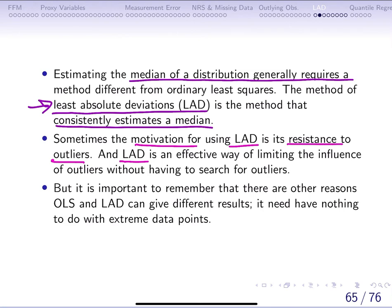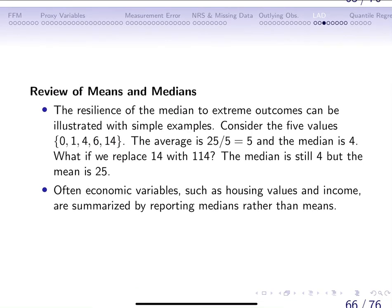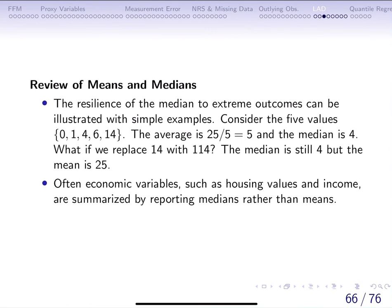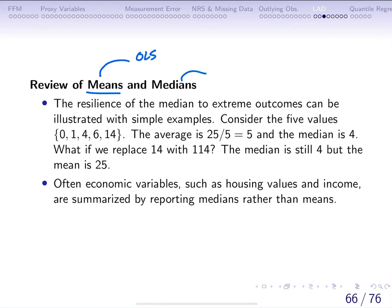It's important to remember that there could be other reasons why OLS and LAD give different results that have nothing to do with extreme data points — missing observations, proxy variables, measurement errors, and so on. Going back to fundamentals: OLS is about average or mean effects, and LAD is about median effects. Remember the difference between means and medians from your intro to statistics courses.